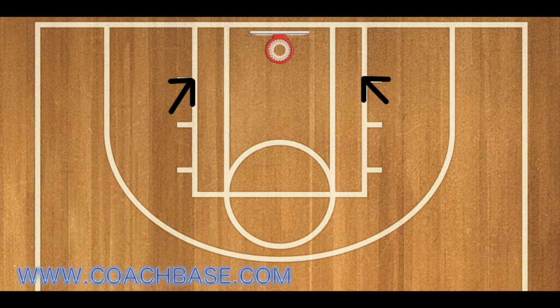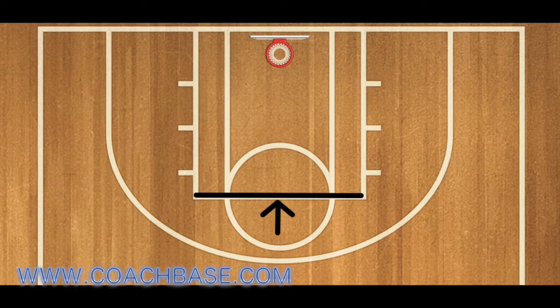Next is the block. Most basketball courts will have a square on each side of the key — that is the low block. Next is the free throw line, or the foul line. This is where you would normally take your free throw shots when you get fouled on a shot.